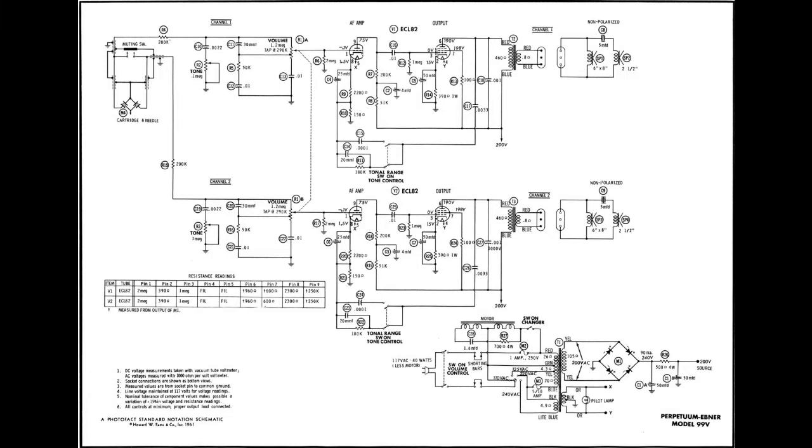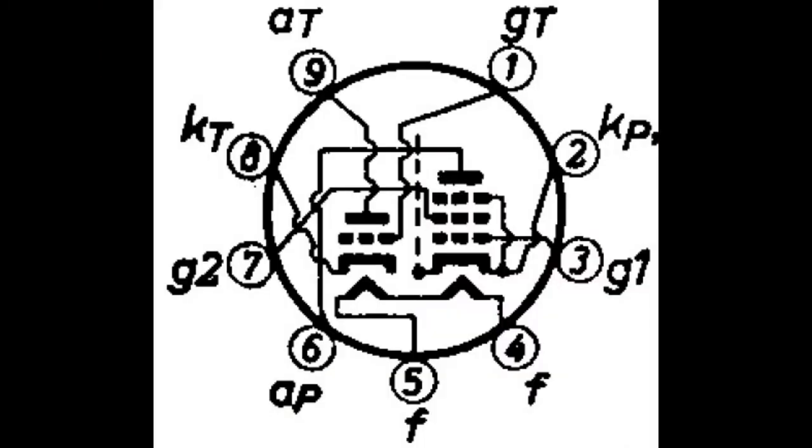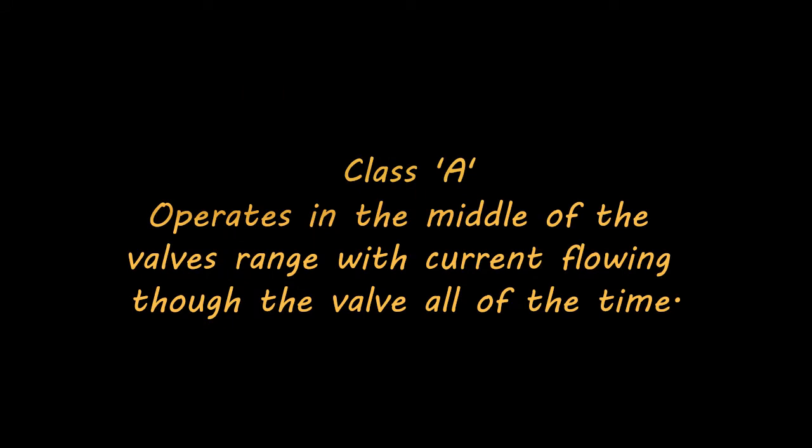So down to brass tacks. What we have here is a two channel valve amplifier using a single ECL82 valve for each channel. The triode portion of the valve does the first stage amplification of the input signal while the pentode side of the valve amplifies this signal to give it enough voltage to run the output transformer. Though it is possible to use the 82 in almost any configuration here, it's being used as a standalone single stage Class A amplifier.